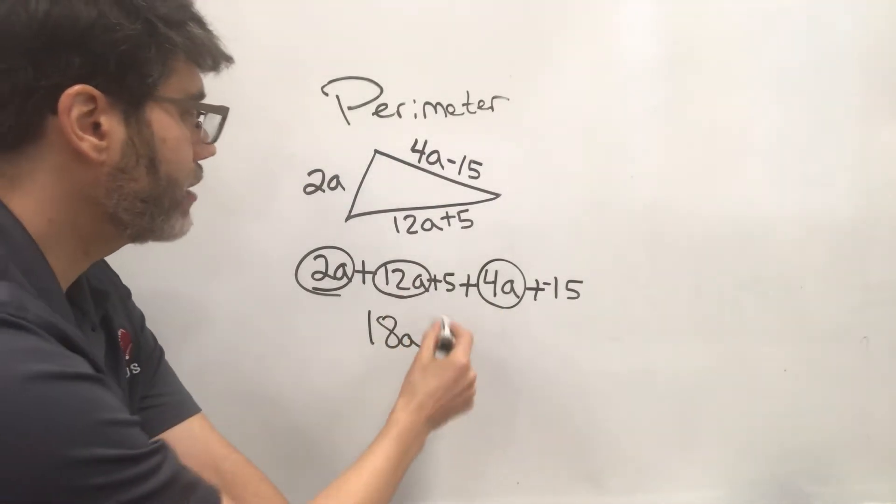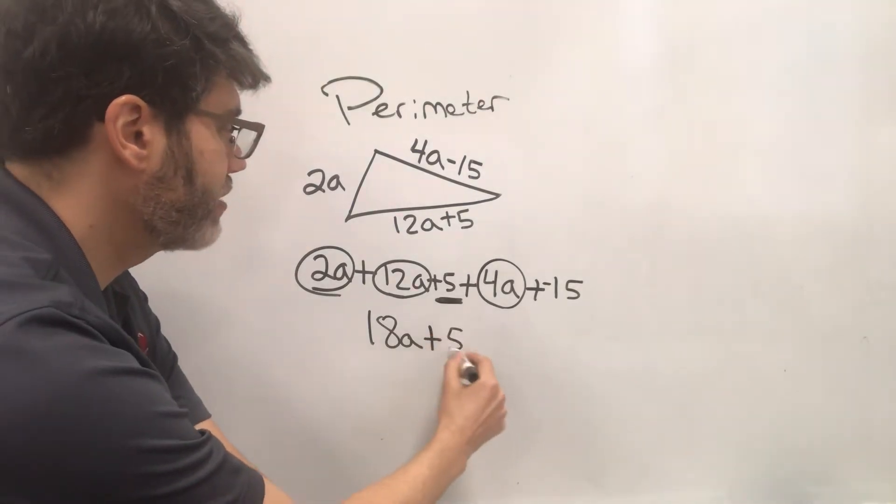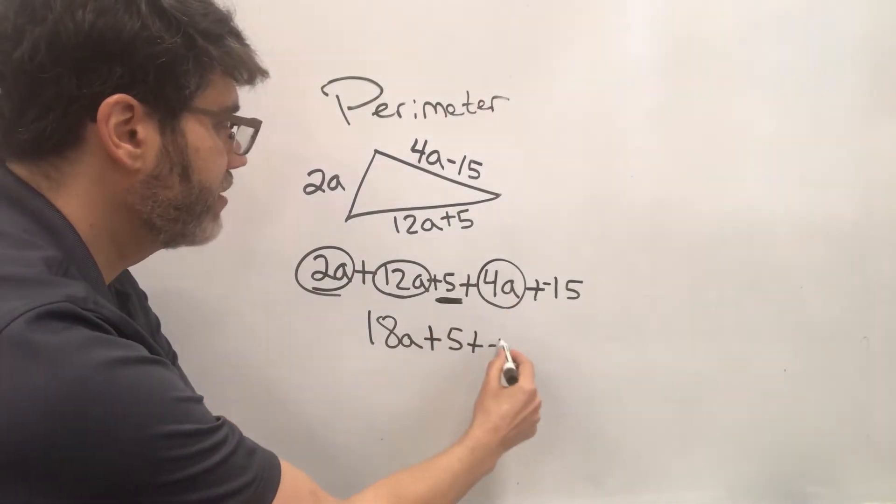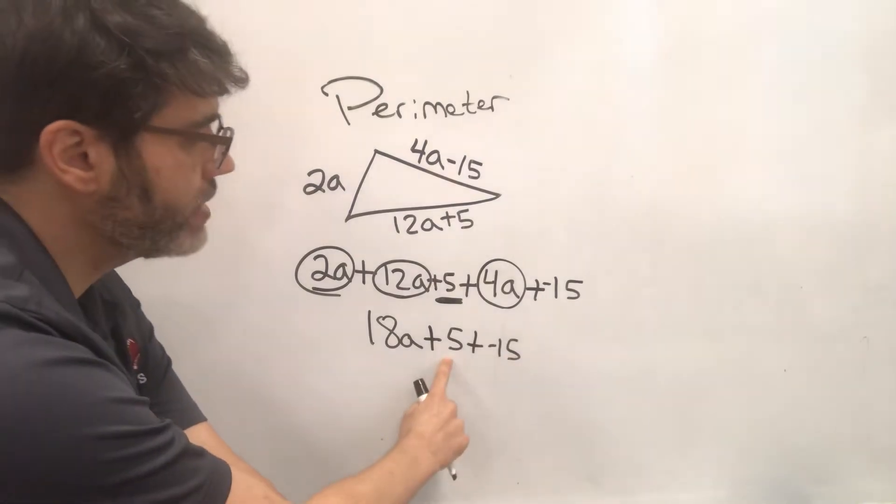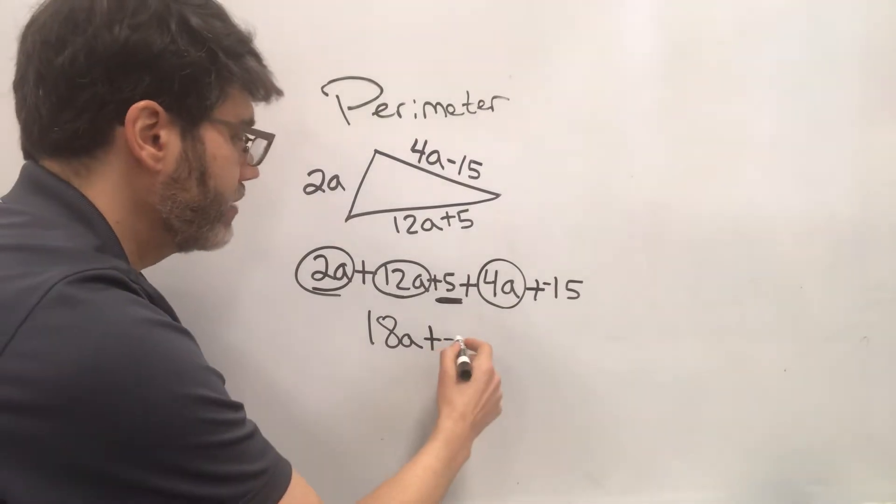All right, now we've got our constants. Here's a 5, so we're going to add 5, and we're going to add negative 15. So let's combine these. 5 plus negative 15 is going to be negative 10. So we're left with negative 10.